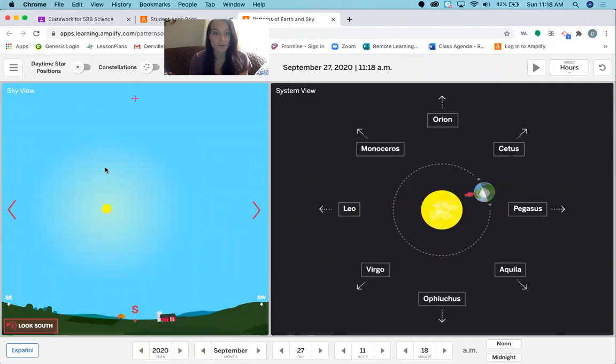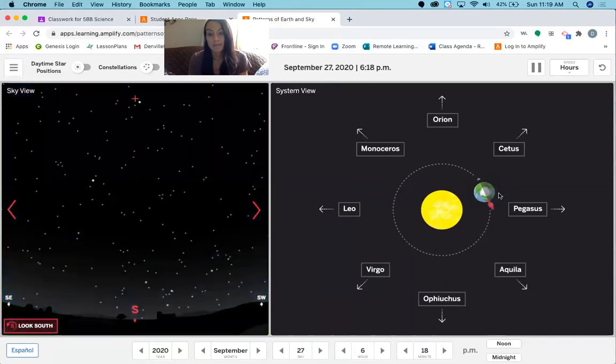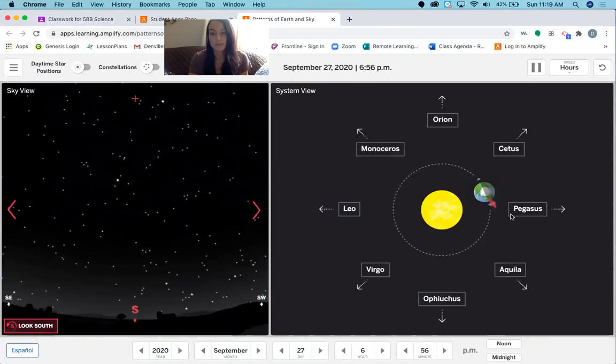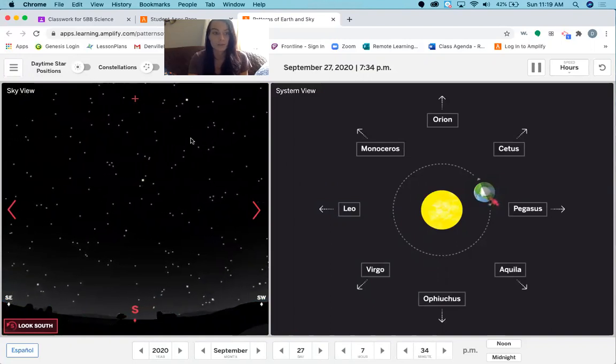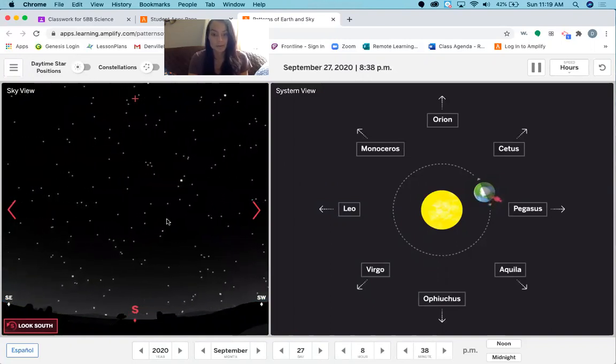You can click the play button. If you notice, this is the time of day it is now, September 27th, and it's going by minutes. You're going to watch what's happening here. If you notice the little red person on the earth, the earth is rotating on its axis. Once the person here starts facing away from the sun, you'll notice in the sky view that it gets dark.